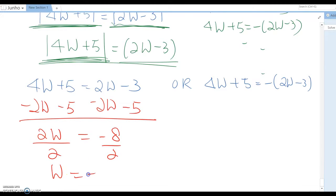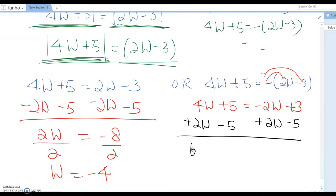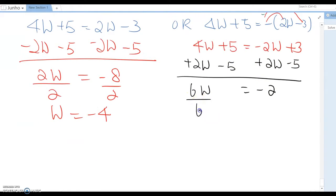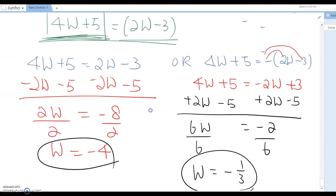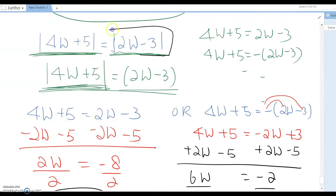Or from here you distribute, so 4w + 5 = -2w + 3, and plus 2w at the same time minus 5, so become 6w = -2, and you divide by 6, and w becomes -1/3.